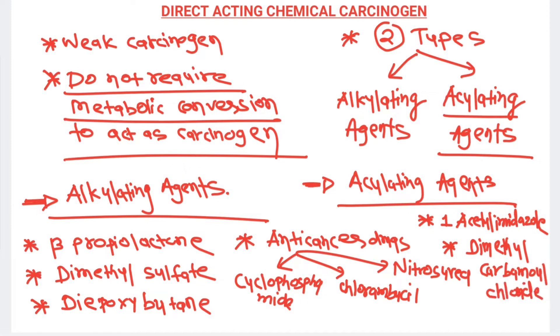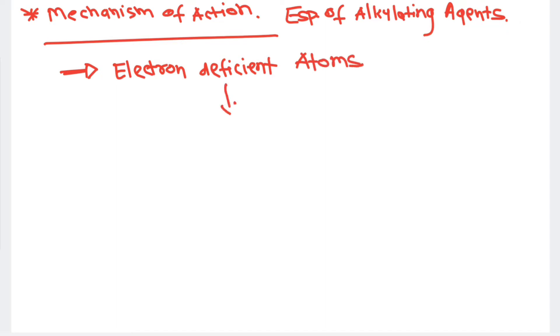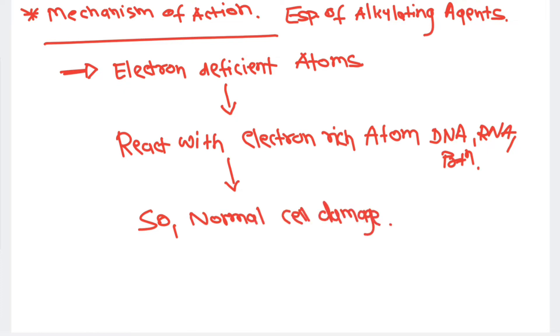Now let's see the mechanism of action of direct acting agents, particularly alkylating agents. These substances are electron-deficient atoms, so they can react with electron-rich atoms such as DNA, RNA, and proteins, causing damage to those substances. Normal cells can be damaged this way. Usually alkylating agents and anti-cancer drugs cause cancer cell destruction, but normal cells are also destroyed because of their electron-deficient property.